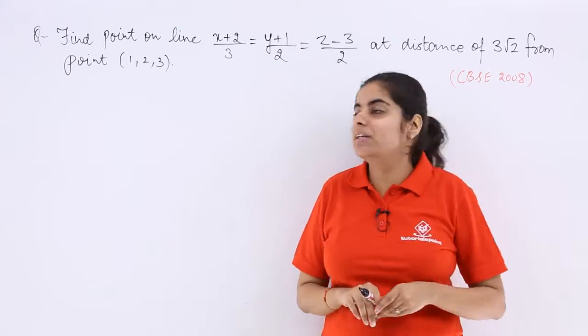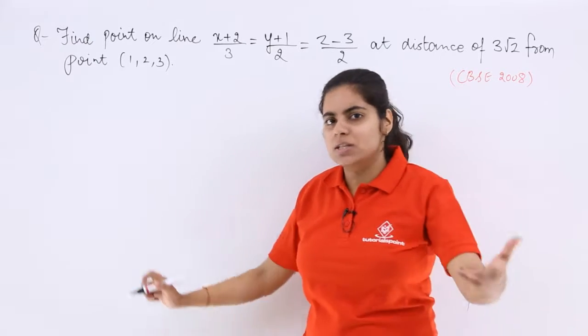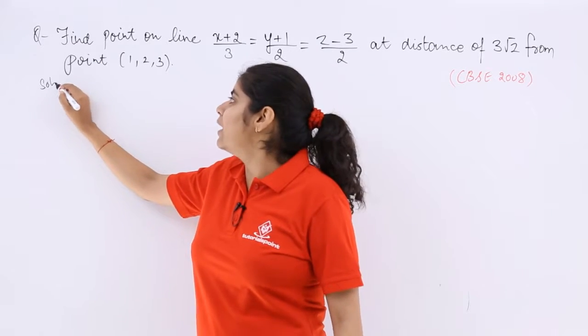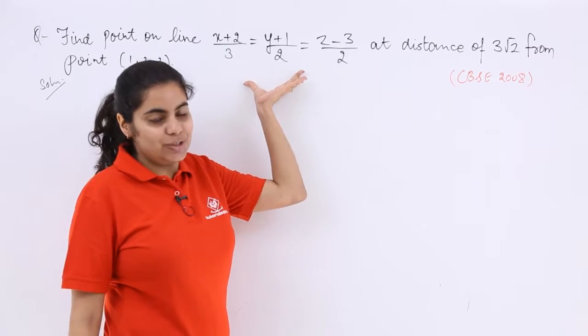So the distance has been given, you have been given a Cartesian equation and you have been given a point. So what are we waiting for? I am writing here solution, let's start with the solution. So this is the given Cartesian equation.